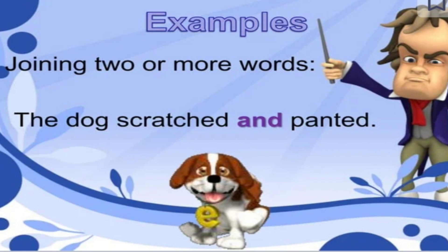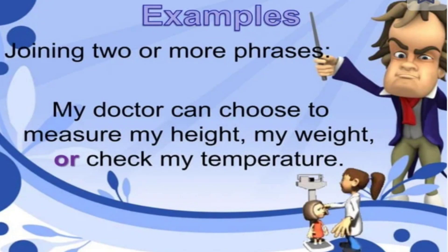Example of two or more words: 'The dog is scratched and painted.' 'And' connects both words. We use 'and' for adding similar information or ideas — it means 'in addition.' Now an example of phrases: 'My doctor can choose to measure my height, my weight, or check my temperature.' We use 'or' to connect different possibilities.